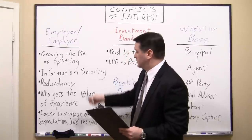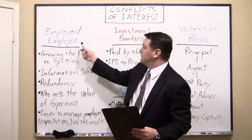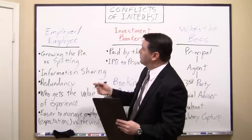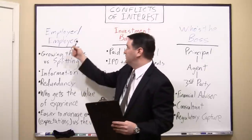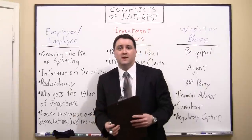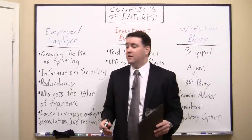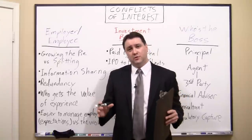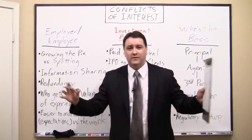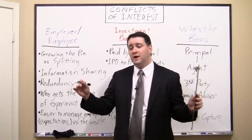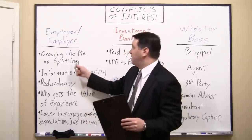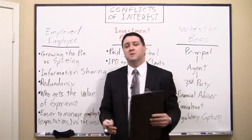The first one I want to talk about — and I have the most examples from this — is the relationship between employer and employee. If the employee doesn't have interests that are perfectly aligned with the employer, that can create conflicts of interest. The first example is what I call growing the pie versus splitting the pie. As a business, you and your employees want to increase the profits of that business, and you're aligned in that. But when it comes to splitting them between ownership and employee pay, those interests can become misaligned.